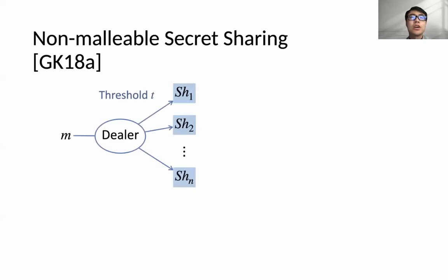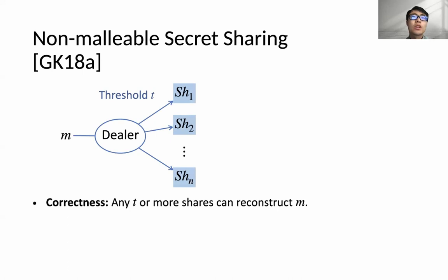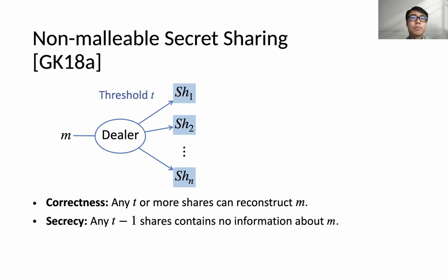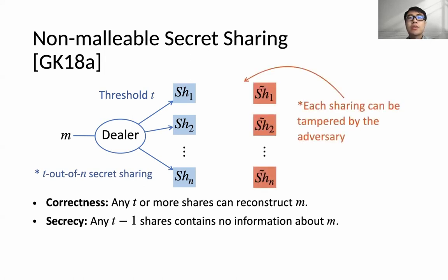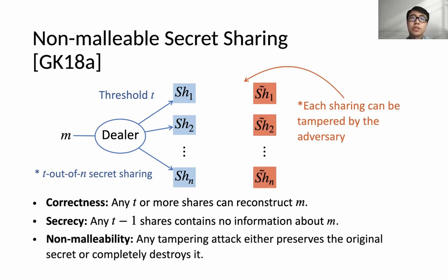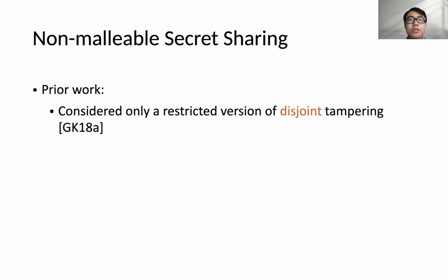For non-malleable secret sharing, the notion was first proposed by Goyal and Kumar in 2018. Suppose you have a secret m and want to split it into n shares with threshold t, such that given any t or more shares one can reconstruct m, while any t minus 1 shares contain no information about m — this is called t-out-of-n secret sharing. Non-malleability is considered in the case where each share may be tampered by an adversary, and security guarantees that any tampering attack either preserves the original secret or completely destroys it. The prior work only considered a restrictive version of destroying tampering; their construction does not work when shares are divided into two destroying tampering sets of equal size.